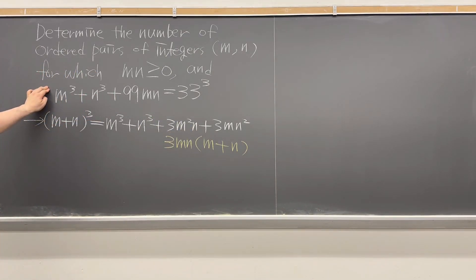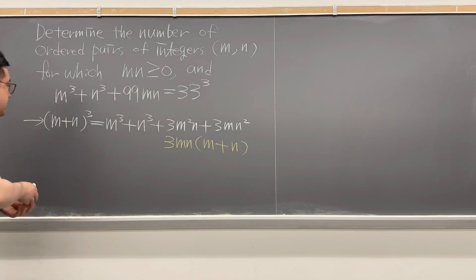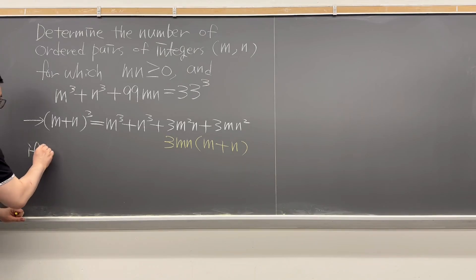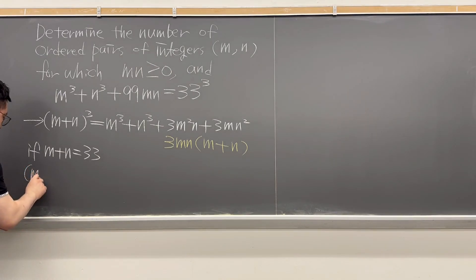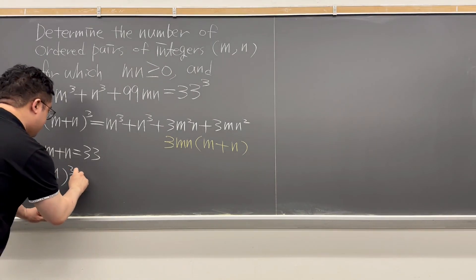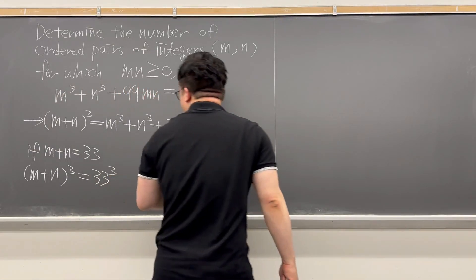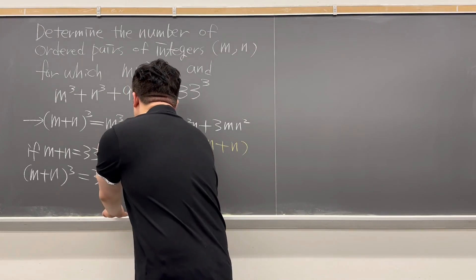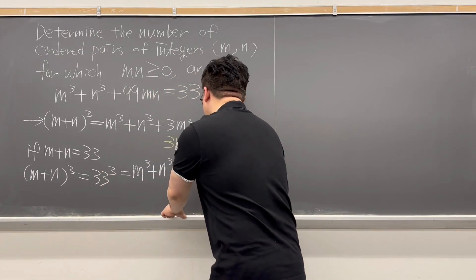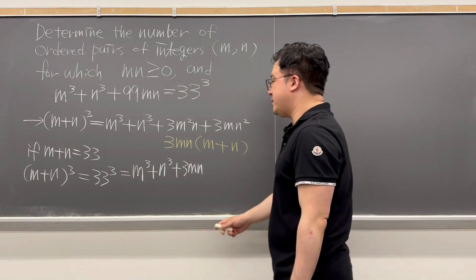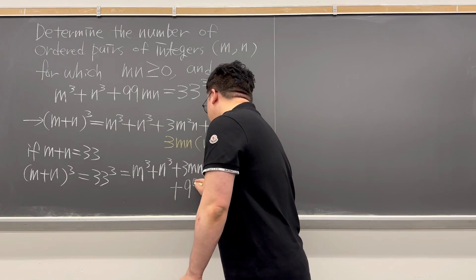Based on the condition from the question, we have m cubed plus n cubed plus 99mn equals 33 cubed. In this situation, we can think that if m plus n equals 33, then (m plus n) cubed equals 33 cubed. We already have (m plus n) cubed as m cubed plus n cubed plus 3mn times (m plus n), and since (m plus n) equals 33, the last term becomes 99mn — which is exactly what we need.